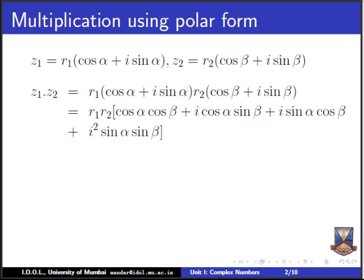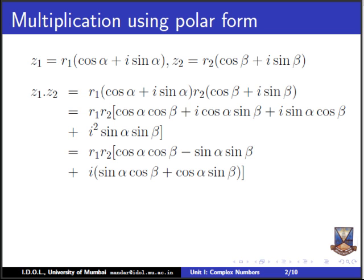Taking R1·R2 together, what remains inside is: cos α cos β + i cos α sin β + i sin α cos β + i² sin α sin β. Since i² = −1, we bring the i terms together to get R1·R2 times [(cos α cos β − sin α sin β) + i(sin α cos β + cos α sin β)]. From trigonometry, cos α cos β − sin α sin β = cos(α + β), and sin α cos β + cos α sin β = sin(α + β).